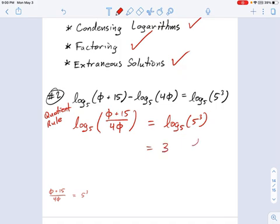And that's just the general rule that the log base b of b to the c equals c. That's a general rule you can use for all logarithms. So we've noticed that that is 3, and that's nice. Then we say log base 5 of this whole mess right here, 5 plus 15 divided by 4φ equals 3.